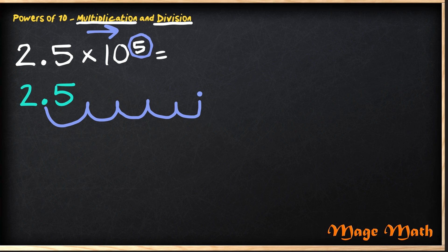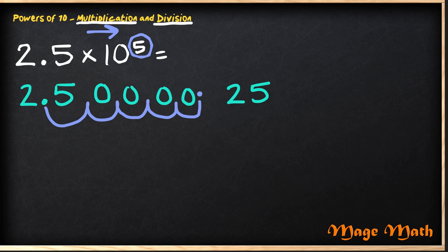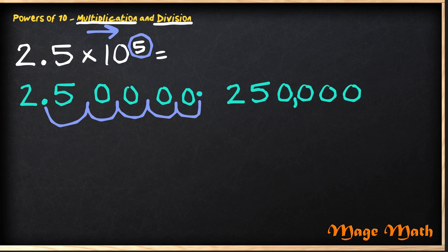You notice that there are blank spaces here — we just fill these in with zeros. So now our new number, we'll rewrite it: our two, our five. Remember, do not write the decimal in because it moved over here. Then we have four zeros. Put in your comma. So two and five tenths times ten to the fifth power equals two hundred and fifty thousand.